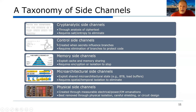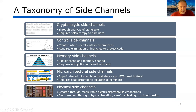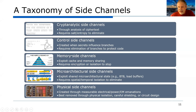The second side channel to worry about is control side channels. These occur when branches in the program — loops or if statements — make decisions on secrets, and those decisions vary the amount of time the program executes or change how the program accesses its instruction memory. If attackers can infer those decisions, they learn something about the internal secrets. Memory side channels are the next layer: if secrets determine how memory is accessed, then by competing in the cache or looking at bus transactions, we can infer information about how memory was accessed and learn about the secrets.